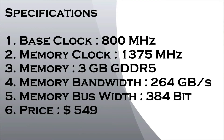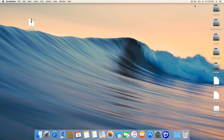The AMD Radeon HD 7970 specifications: the base clock is 800 MHz, the memory clock is 1375 MHz, and the memory is 3 GB GDDR5. The memory bandwidth is 240 GB per second, the memory bus width is 384-bit, and the price is approximately $549. That's all — hope you liked this video, please like and subscribe, stay connected, and thank you for watching.